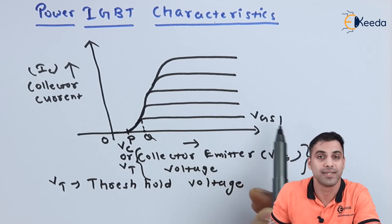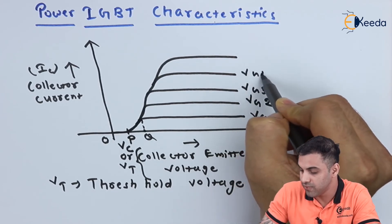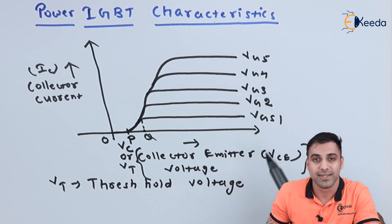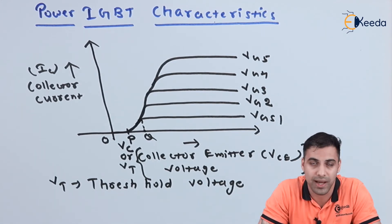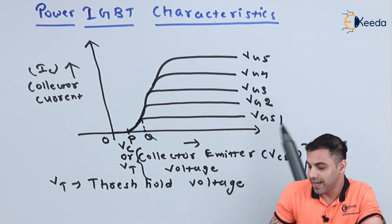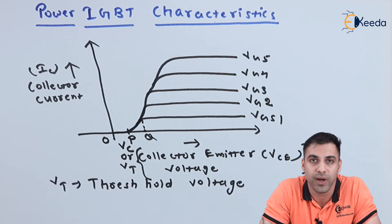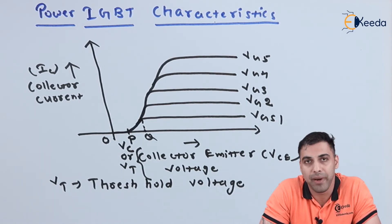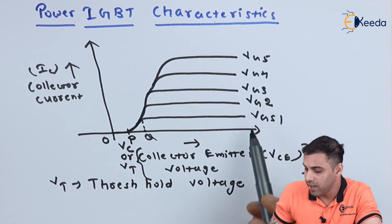Let's say this curve corresponds to VGS1 — that means the gate-emitter supply voltage. Similarly, we have VG2, VG3, VG4, and VG5, where VG is the gate-emitter voltage. We need a gate-emitter voltage supply so that for a specific gate supply with respect to the emitter, the power IGBT starts conducting the collector current. Whenever we supply a specific gate-emitter voltage and connect the collector and emitter terminals to an external supply, the power IGBT starts conducting electric current.